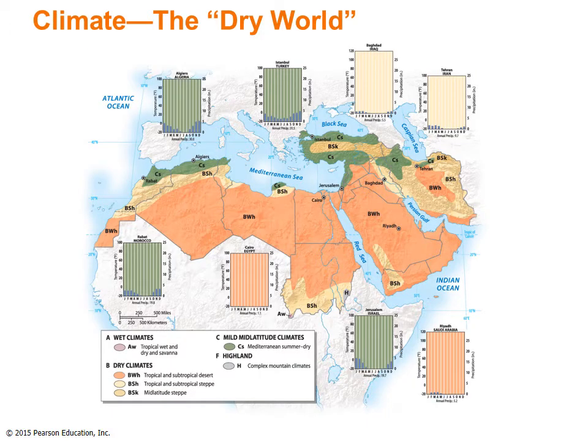Although this region is often termed the dry world, a closer look reveals a more complex climatic pattern in which both latitude and altitude come into play. Dry climates dominate from western Morocco to eastern Iran, where persistent subtropical high-pressure systems offer limited opportunities for precipitation. Mild mid-latitude climates with wet winters are found near the Mediterranean Basin and Black Sea. Saudi Arabia experiences tropical and subtropical desert climate, while the highland of Yemen experiences tropical and subtropical steppe with sufficient precipitation to support steppe vegetation.